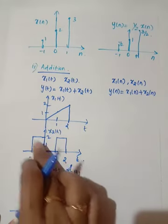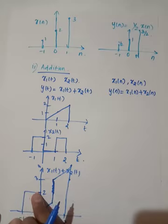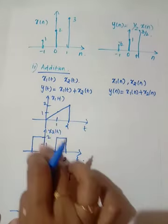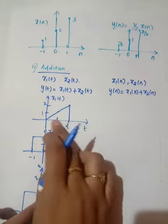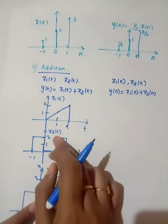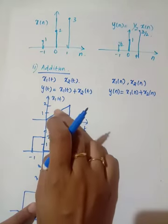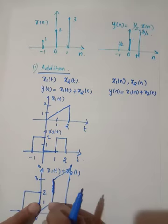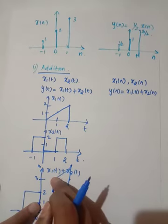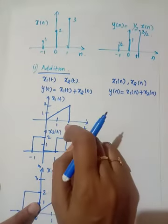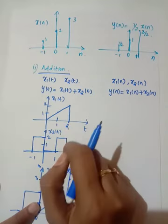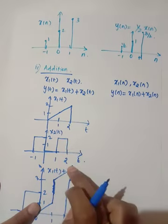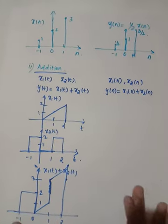From minus 1 to 0, the value is 2, so I have drawn 2 here. Then from 0 to 1, it proceeds accordingly. At time 1, the combined value is 3 — since one signal contributes 2 and the other 1. Then at time 2, each signal contributes 2, giving 4. I have joined the values and added the two signals, producing the resulting waveform.